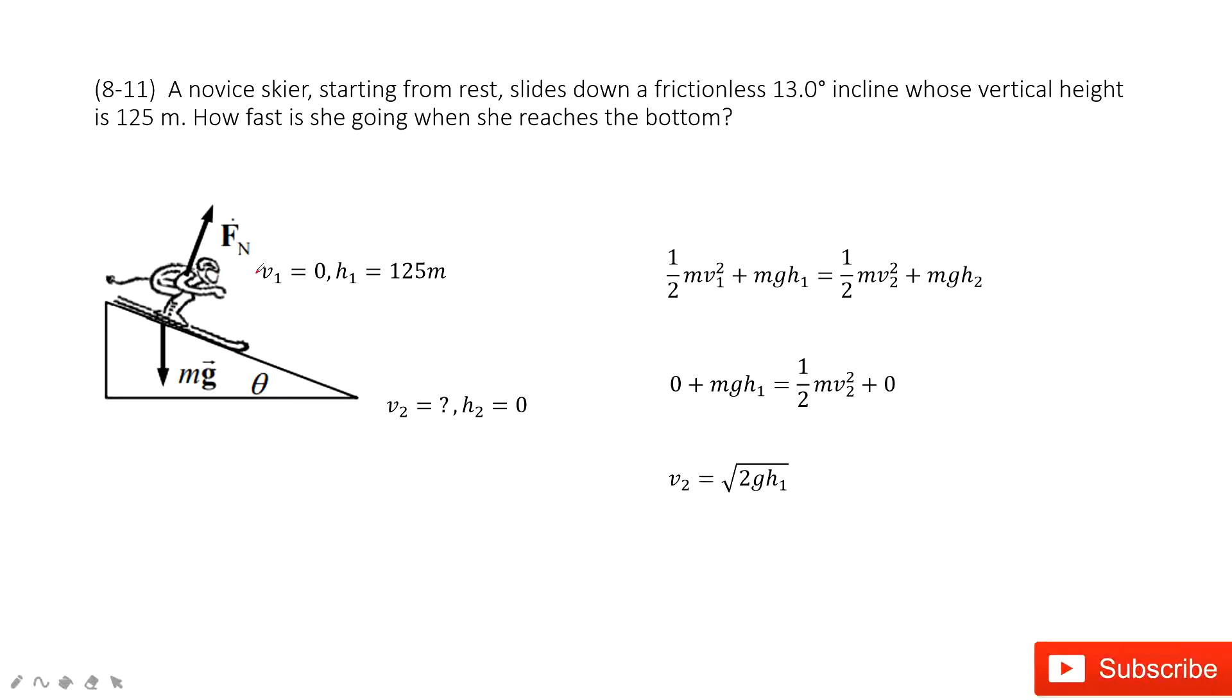And the initial energy includes two parts, the kinetic energy and the potential energy. Kinetic energy is one-half mv1 squared plus mgh1. This is the potential energy.